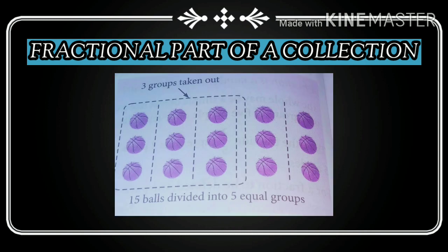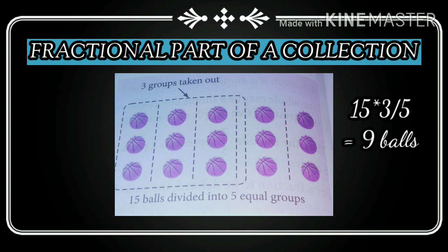The next topic is fractional part of a collection. Suppose you have a collection of 15 balls divided into 5 equal groups — that gives 3 balls in each group. If you take out 3 groups out of these 5 groups, as the picture shows, you will take out 9 balls. How? You have a total of 15 balls, and you calculate 3 upon 5 multiplied by 15, which equals 9. So 3 upon 5 of 15 is equal to 9.